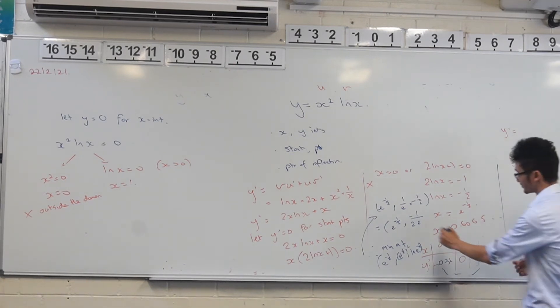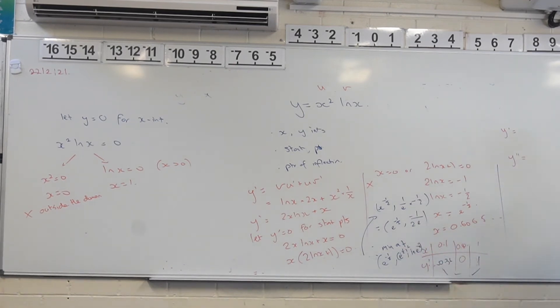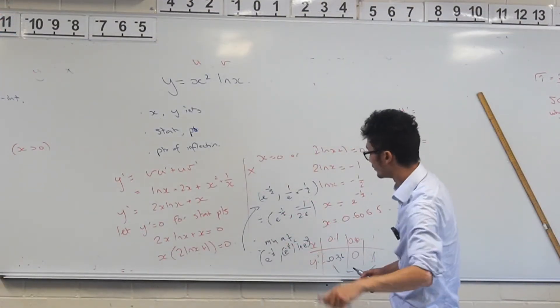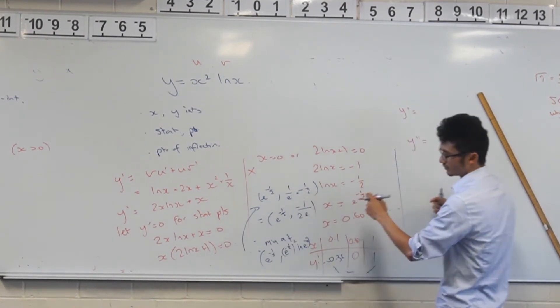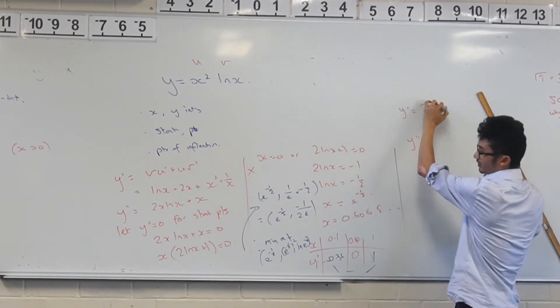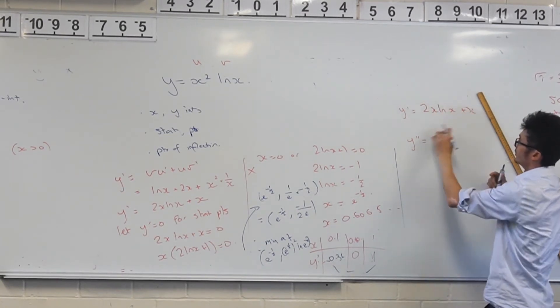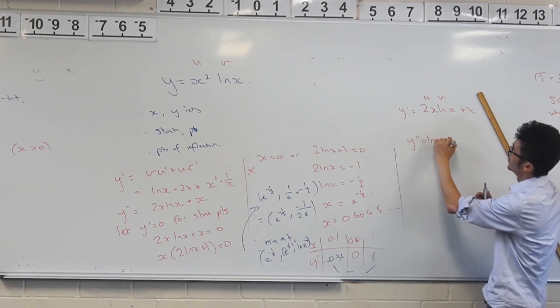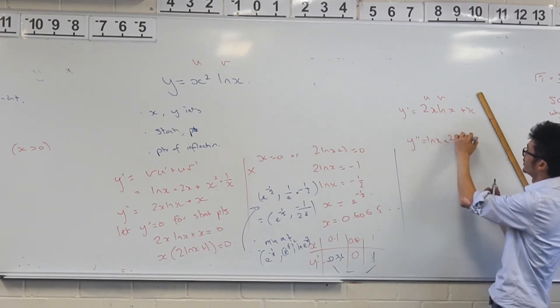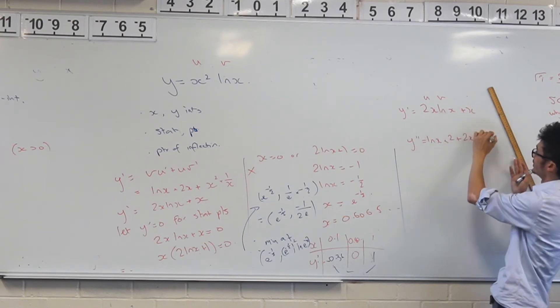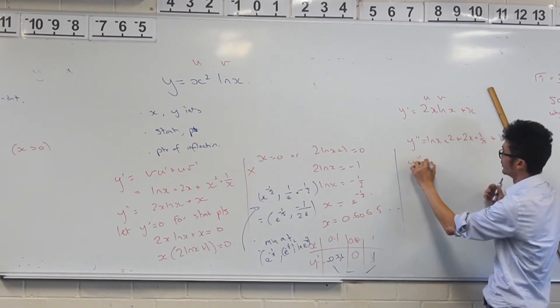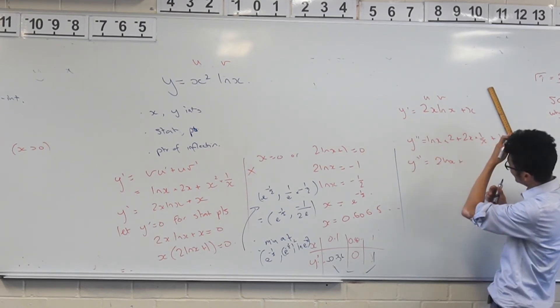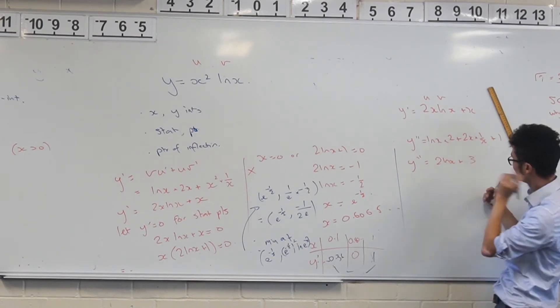Alright, let's keep going. So y double dash now. So what we can do here is then we can say, what's the second derivative? Well, I'm going to have to use our product rule again. So I've got 2x ln of x plus x. So u dash plus u v dash. So I've got ln of x times 2 plus 2x times 1 over x plus the derivative of this guy is just 1. That's a nice easy one. And so that's 2 ln of x plus, oh, that's interesting. That just simplifies to 3.